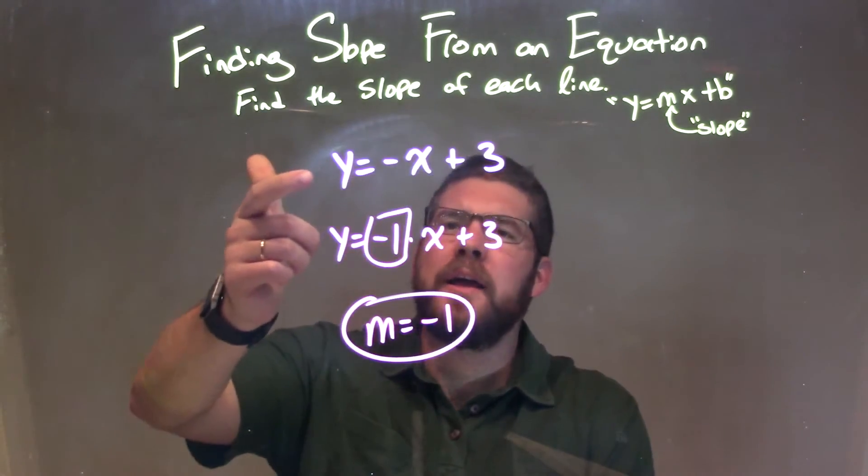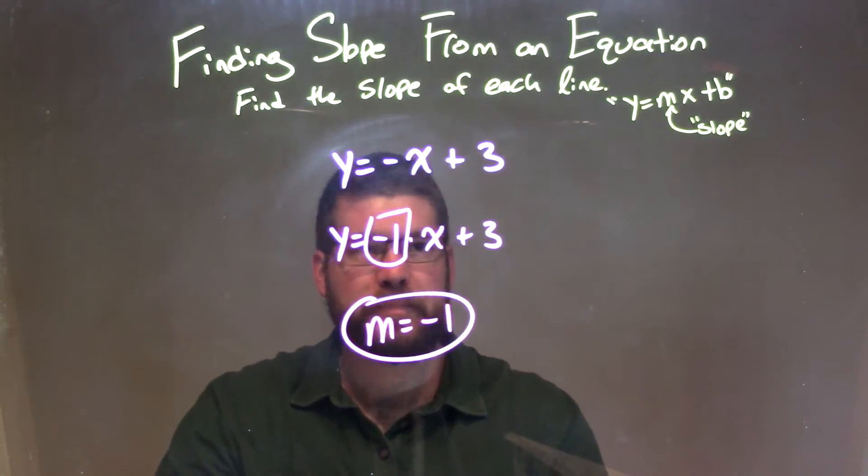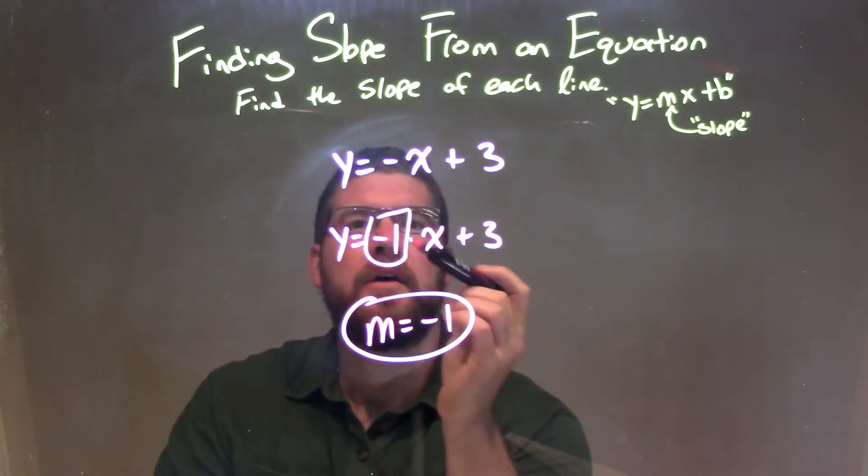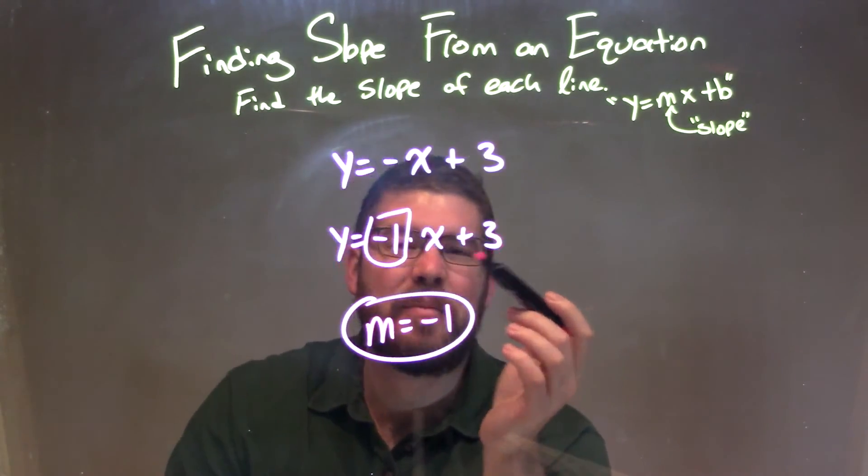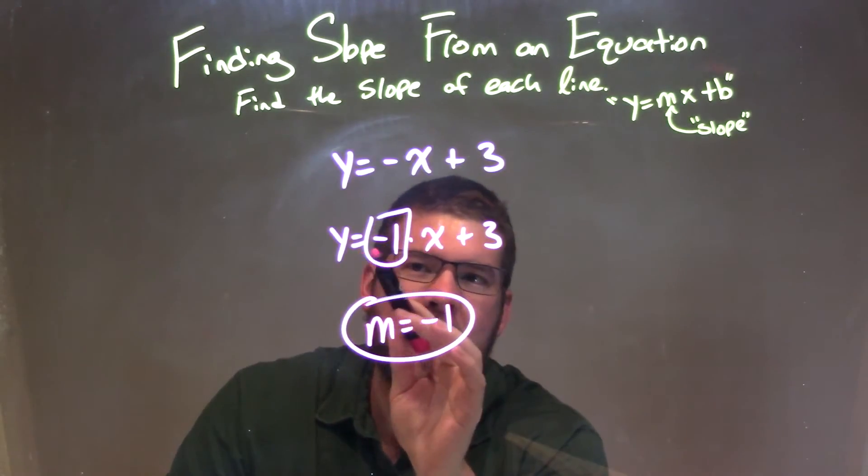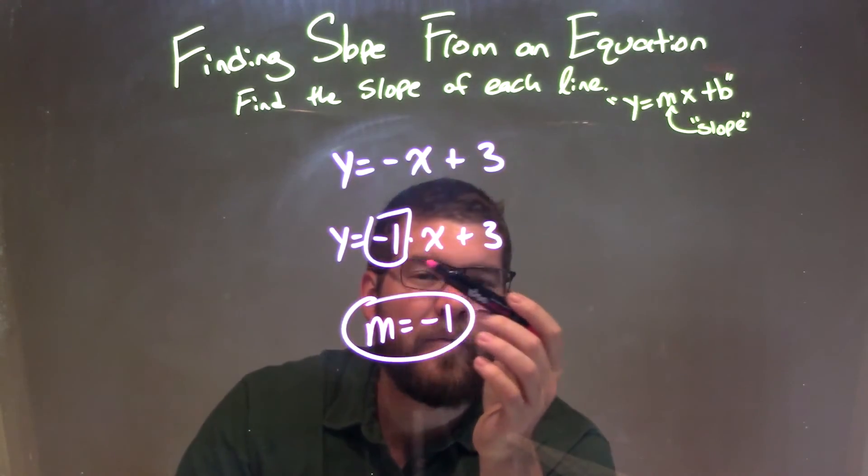So let's recap. We're given y equals negative x plus 3, and we want to identify the slope. I see it's in my slope-intercept form, but some people might have a hard time seeing the m value. So we see that negative x is the same thing as negative 1 times x. So I rewrote that here: y equals negative 1 times x plus 3. That better helps me see the m value.